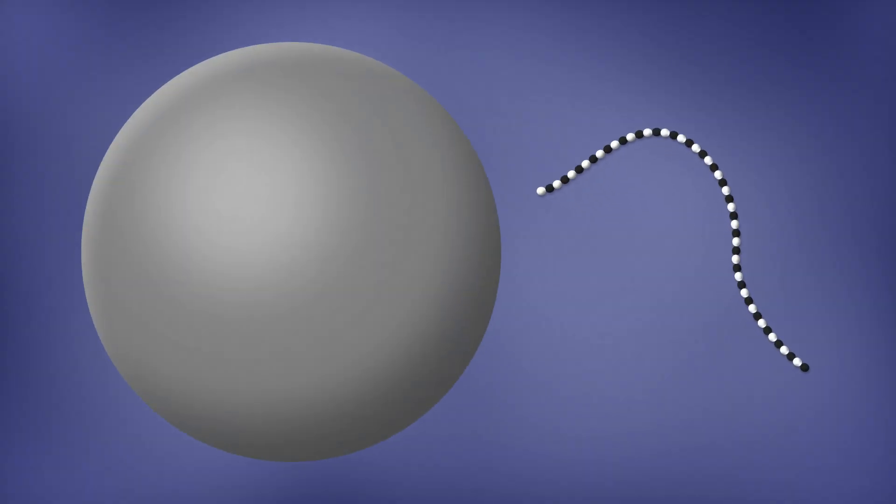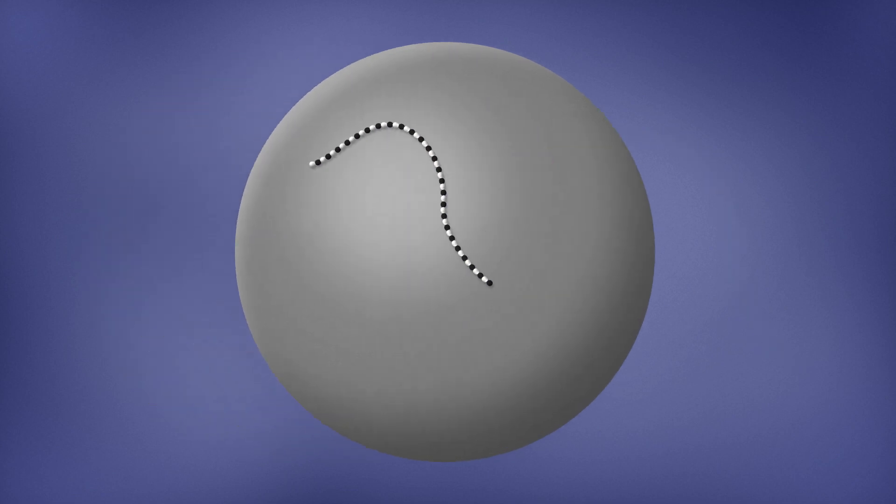One example is that we developed a process that allows us to control the shape of polymer chains on the surface of nanoparticles. And because the properties of polymers are very sensitive to the shape, this allows us to create hybrid materials with unprecedented property combinations.